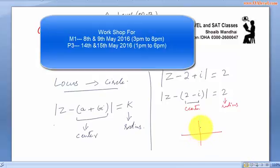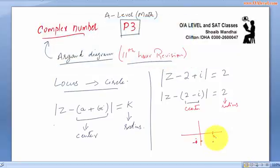Now, our diagram would be 2 minus i which represents 2 on the real value and negative i on the imaginary value. This would be our center and the radius is 2.